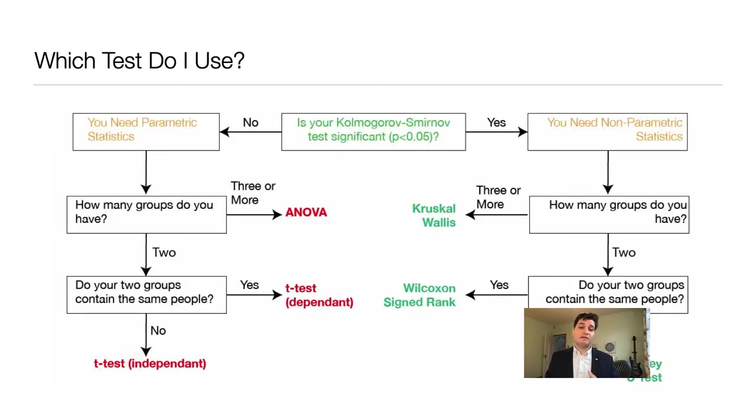Now in the previous videos I introduced you to this flowchart to understand which test to use. If you have normal data which is a non-significant Kolmogorov-Smirnov test then you go into your t-tests and ANOVAs. If you have a significant Kolmogorov-Smirnov test then use non-parametric tests. So your Kruskal-Wallis, your Wilcoxon signed rank and Mann-Whitney U test. If this is new to you go look at my previous videos. They will go over everything about stats that you need to know and explain this chart in full.